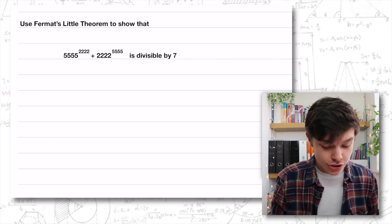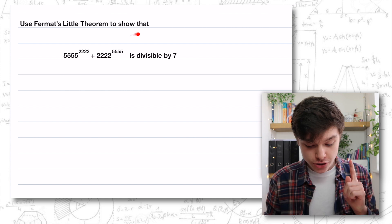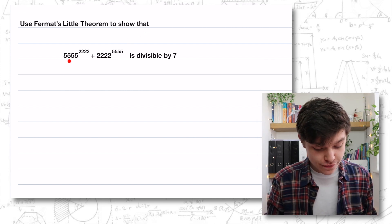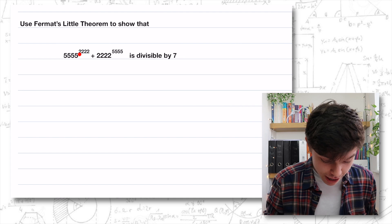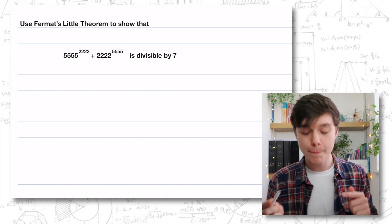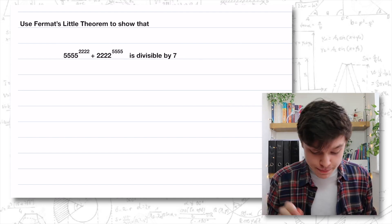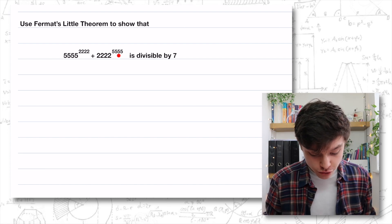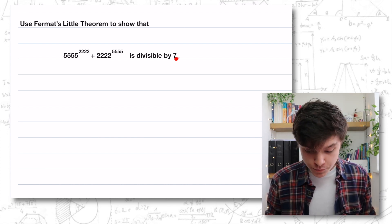In this video we're going to be having a look at Fermat's Little Theorem. We're going to be having a look at modulo arithmetic and how we can use Fermat's Little Theorem to help us prove things. The question today is to use Fermat's Little Theorem to show that 5,555 to the power of 2,222 plus 2,222 to the power of 5,555 is divisible by 7. How on earth do we do that? Let's jump in to the maths.